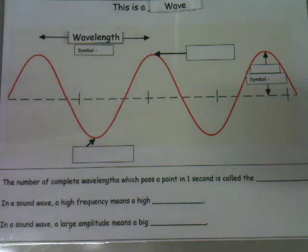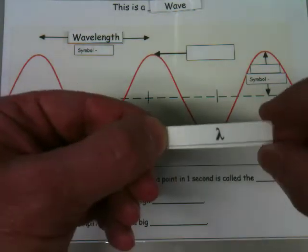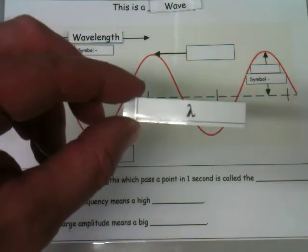The symbol for wavelength is called lambda. It's that there, and it's like an upside down Y. We say lambda, so put that there. Wavelength is lambda.